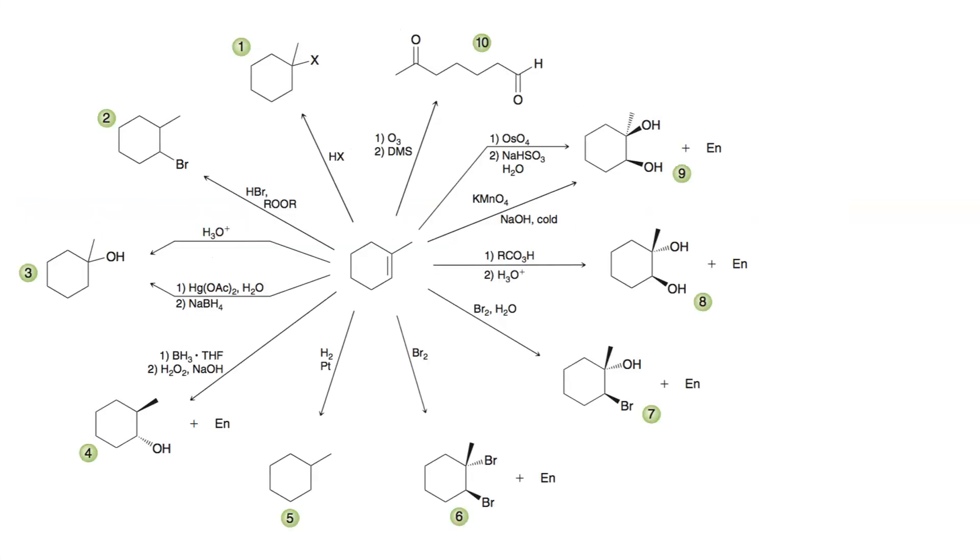Here's a picture of all 10 of them and their regiochemical and stereochemical outcomes on the depicted alkene in the center. We're going to go through each one of these briefly, but you should be able to start from a different alkene and draw the outcome for each set of reagents.